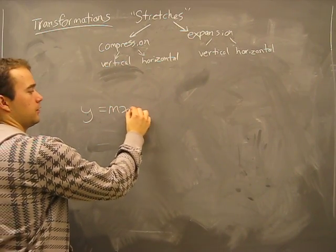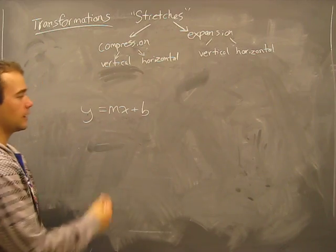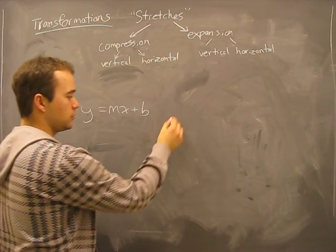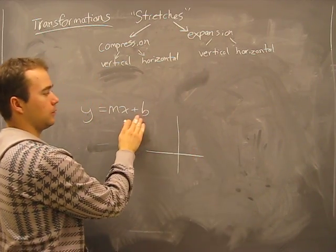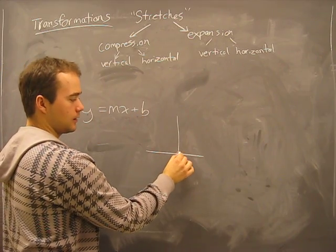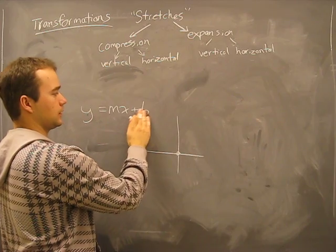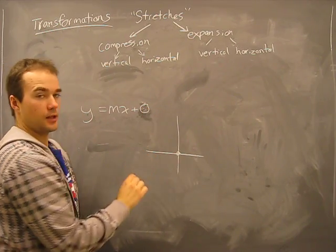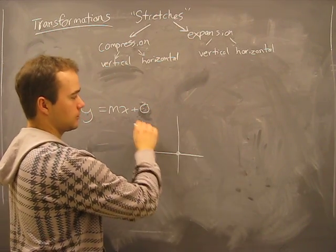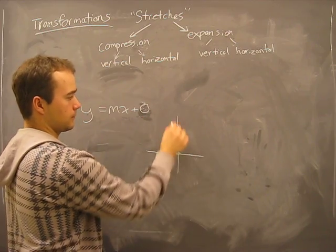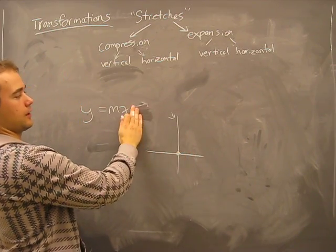You should be familiar with this. Suppose we have a graph and the line passes through y equals zero. So we can say the y intercept here is zero, so it's going to go through there, we can just ignore that.